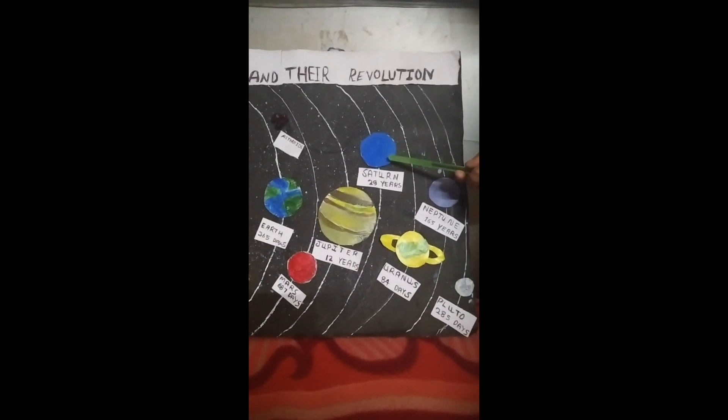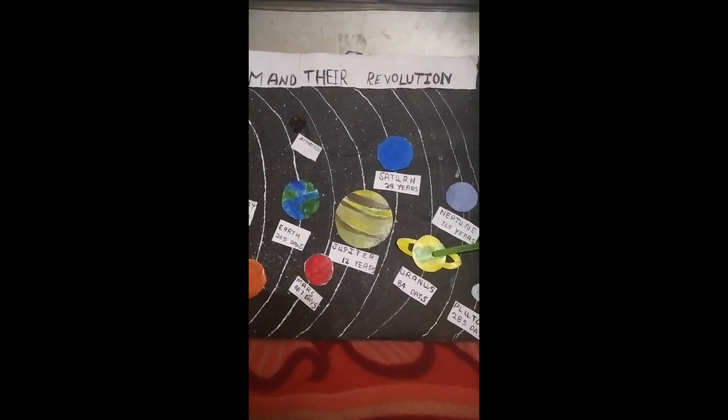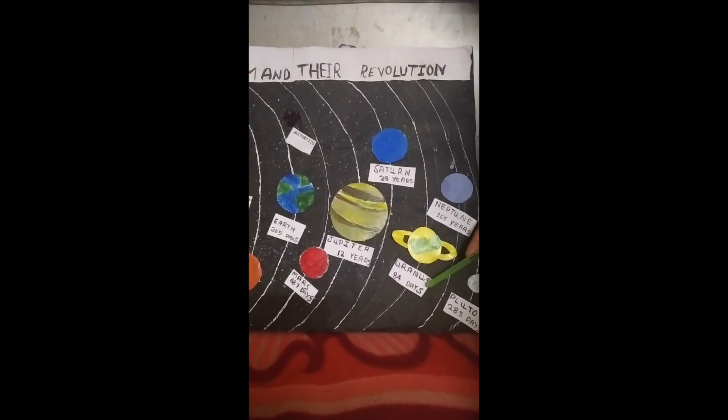The sixth is Saturn. The revolution period is 29 years. The seventh is Uranus. The revolution period is 84 days.